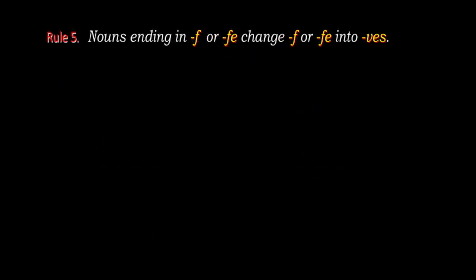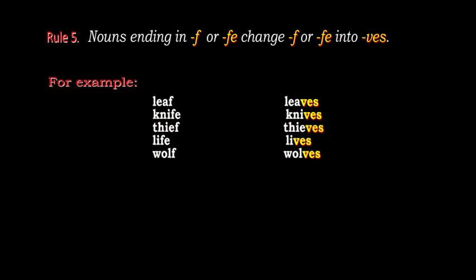Rule number 5: Nouns ending in f or fe — f and fe is changed into -ves. For example, leaf changes to leaves, knife changes to knives, thief changes to thieves, life changes to lives, wolf changes to wolves. These words end with f and fe, so f and fe is removed and changed to -ves.